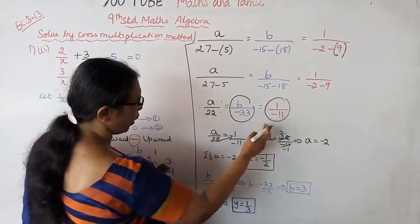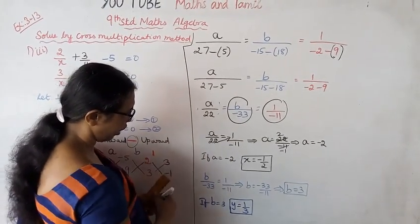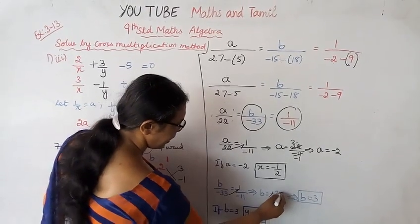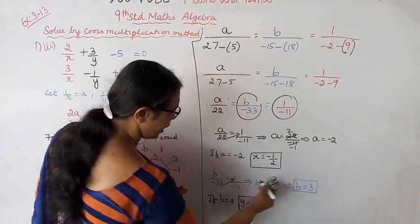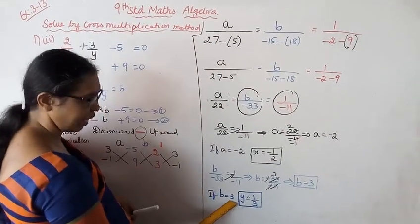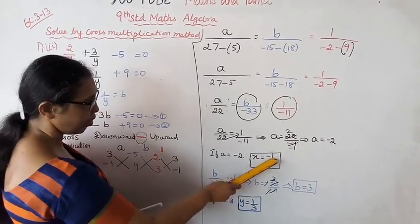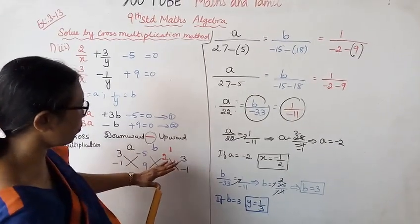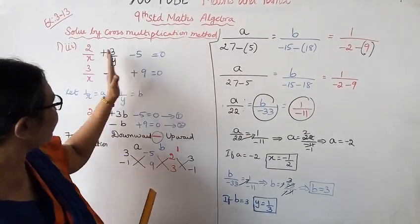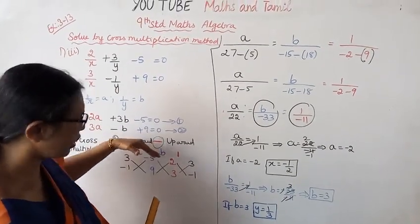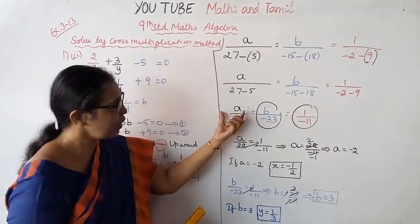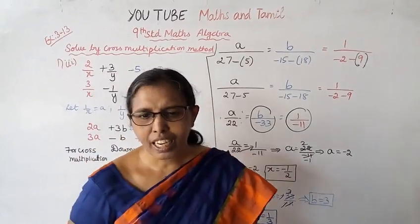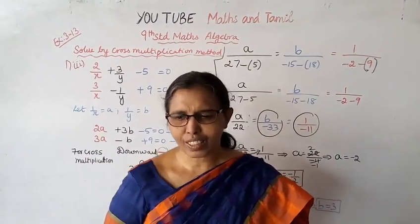For b: b by minus 33 equals 1 by minus 11, so b equals minus 33 divided by minus 11, giving b equal to 3. Since b equals 1/y and b equals 3, we get y equal to 1/3 by taking the reciprocal. We verify: left-hand side xy constant equals right-hand side zero. Thank you.